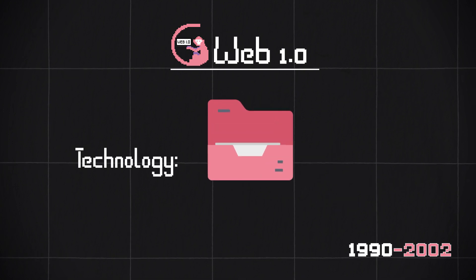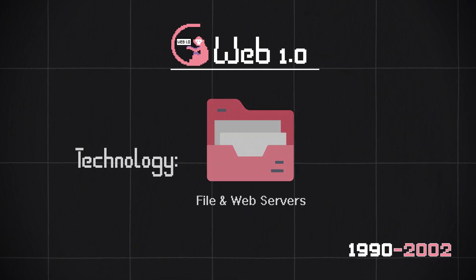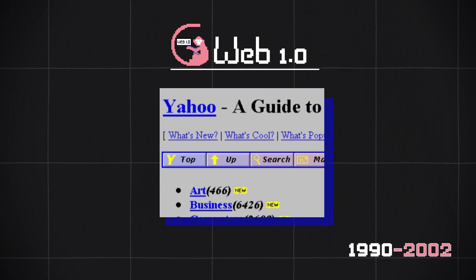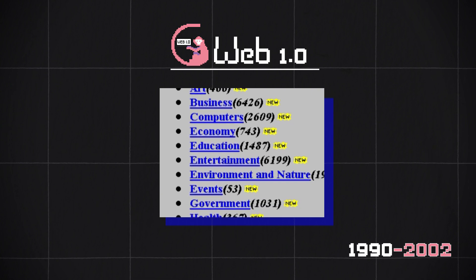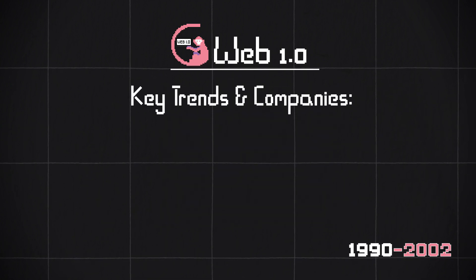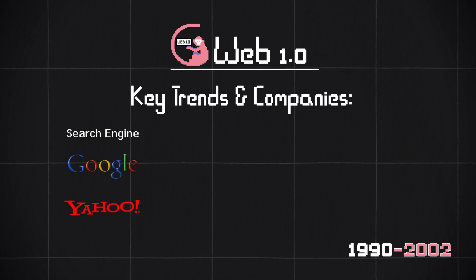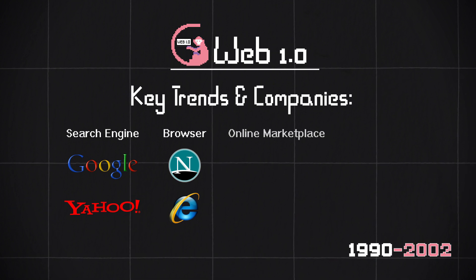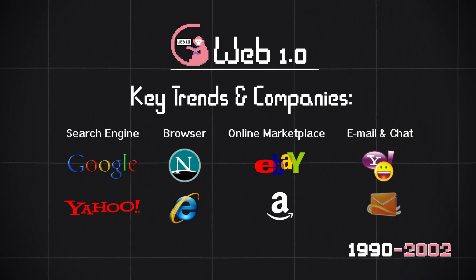Web 1.0 is company-focused and information-driven. The technology that drove Web 1.0 were file and web servers. Many businesses tried to get online and publish their information. Because of the huge amount of information that started to appear online, key trends and companies of this era were search engines like Google and Yahoo, browser products such as Netscape Navigator and Microsoft's Internet Explorer. We also saw a more interactive version of the internet emerge with online marketplaces like eBay and Amazon, and email and chat services like Yahoo and Hotmail.